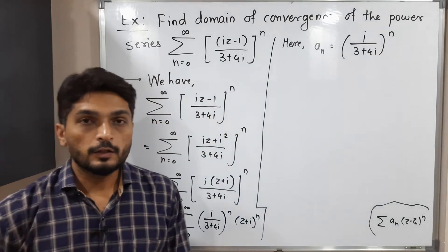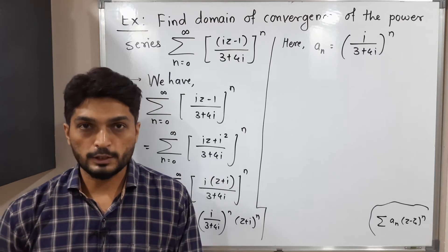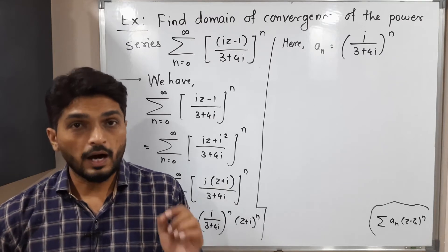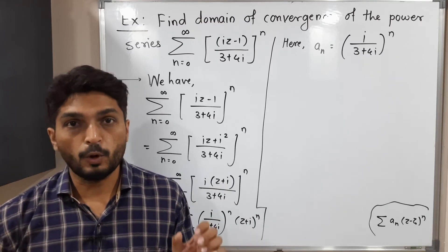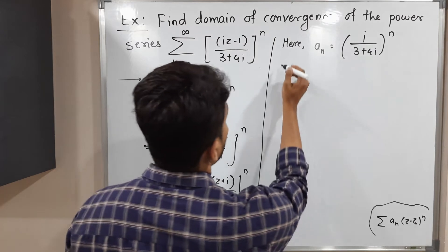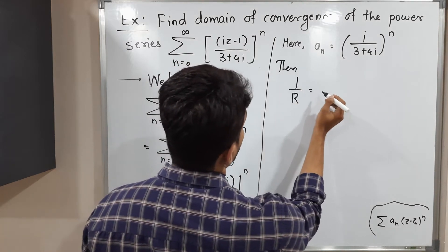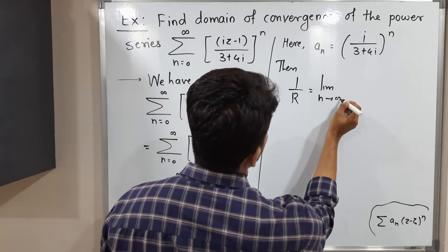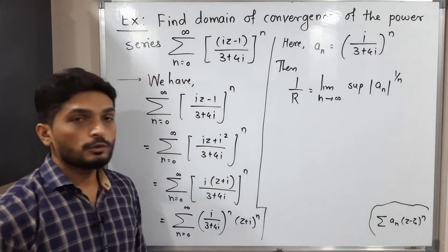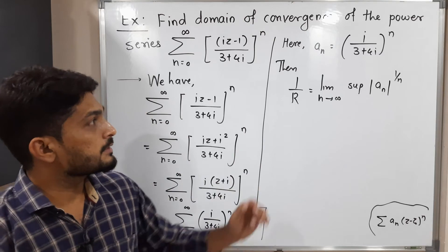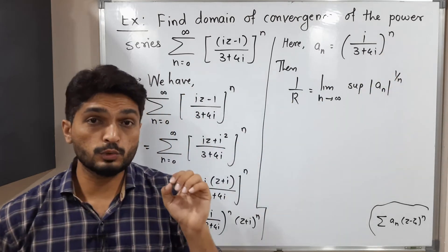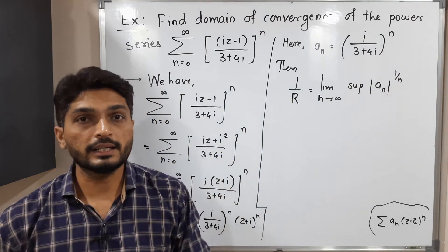Now we have to find the radius of convergence. There are two different formulas. We can use the formula from the definition, as well as the second formula R = limit n tends to infinity of |aₙ / aₙ₊₁|. But here I am going to use the first formula, which is 1/R = lim sup of |aₙ|^(1/n). The reason I'm using this formula is that our aₙ already has a power raised to n, so the n and 1/n will cancel each other.